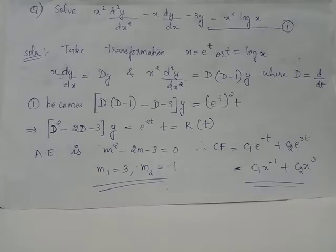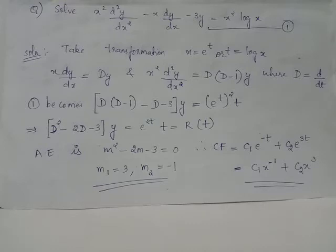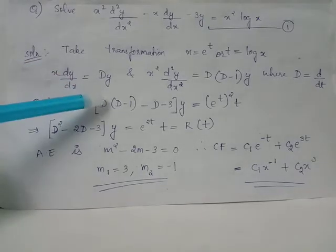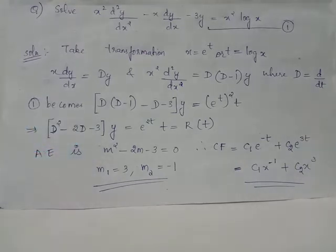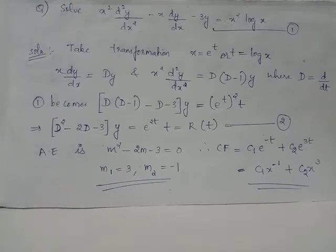Here D stands for the differential operator with respect to independent variable t. Thus, equation 1 can be written as D(D minus 1) minus D minus 3 acting on y equals e raised to t squared multiplied by t, because x squared becomes e raised to 2t and log x becomes t, imposing the transformation. On simplification, the LHS becomes D squared minus 2D minus 3 acting on y equals e raised to 2t times t.